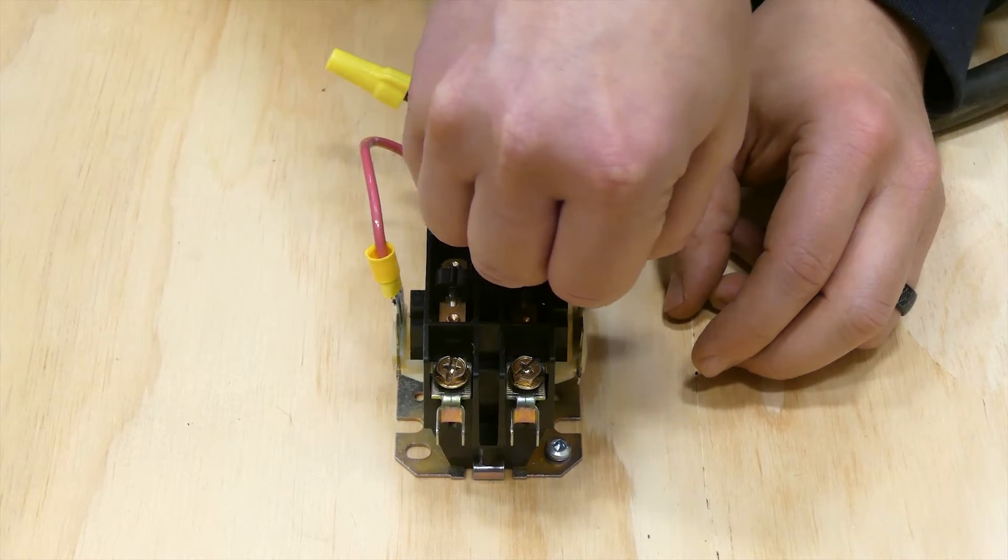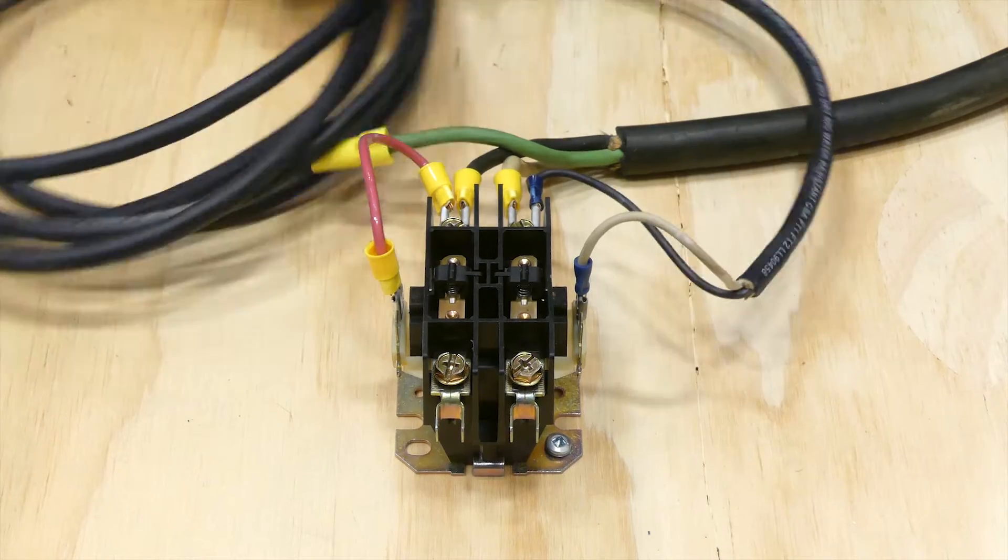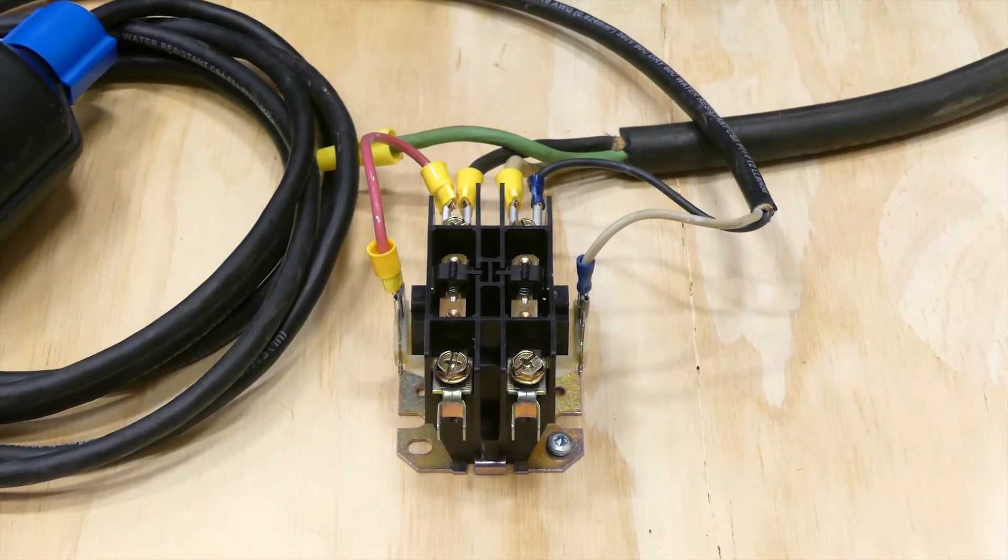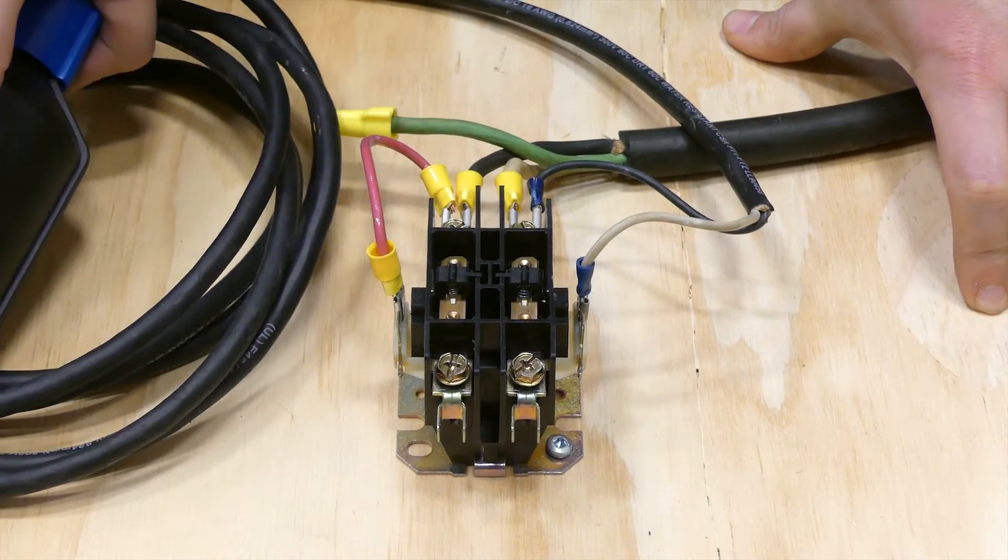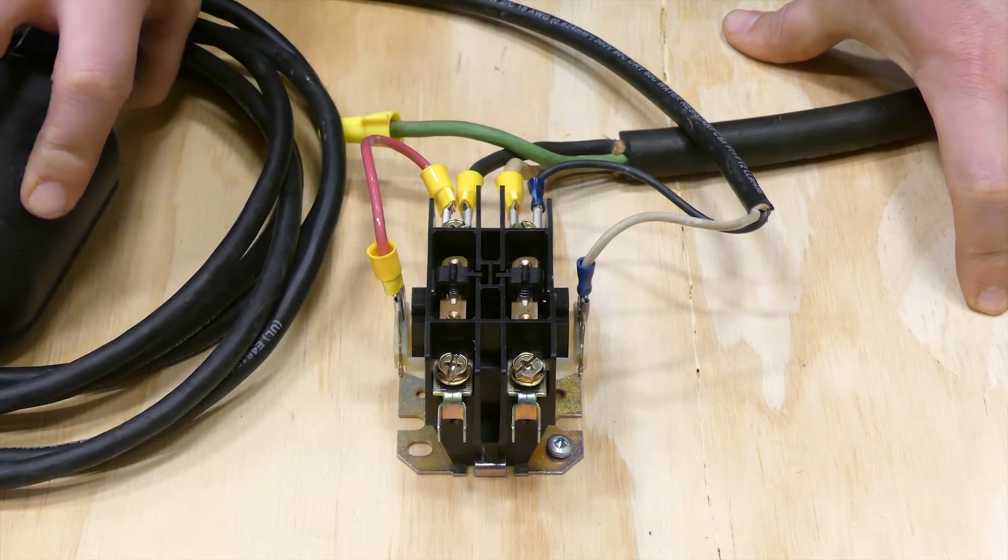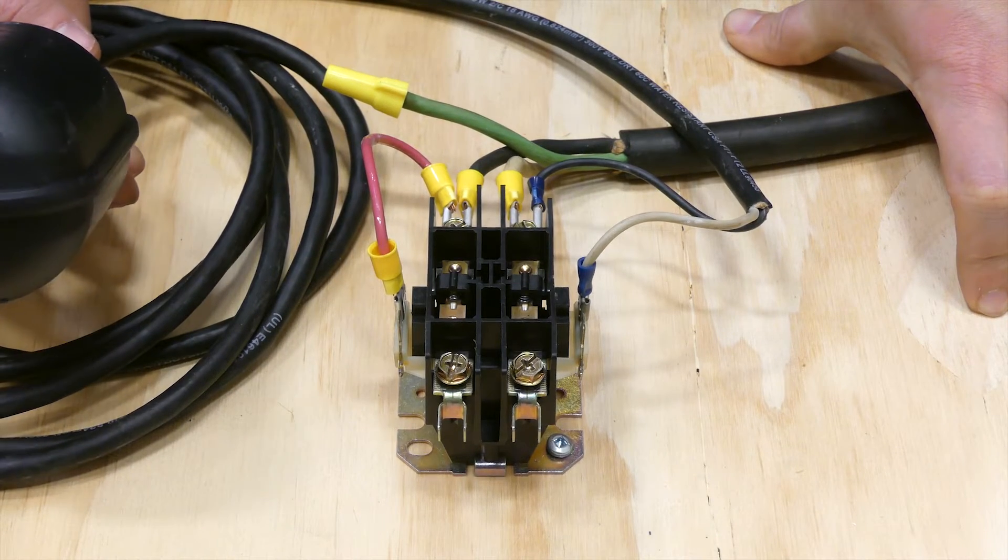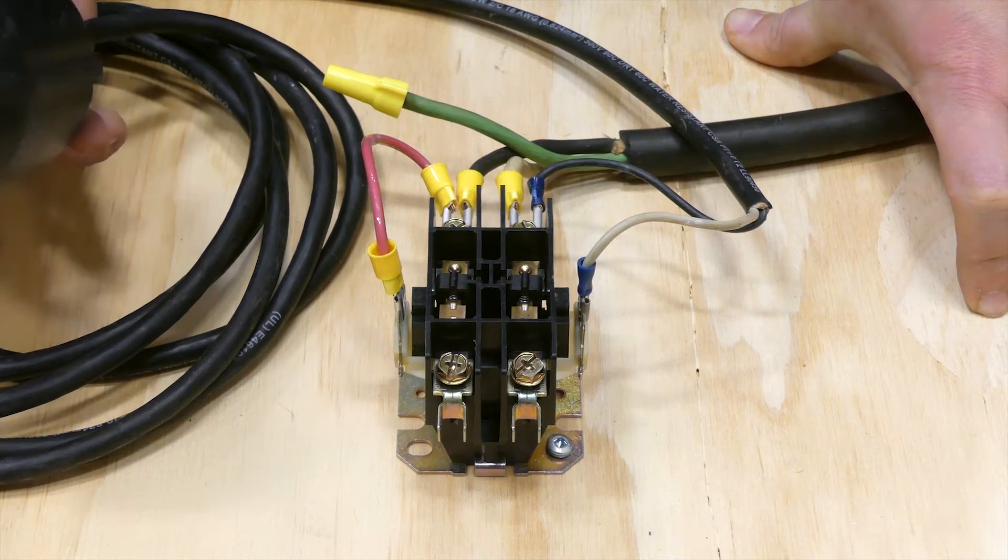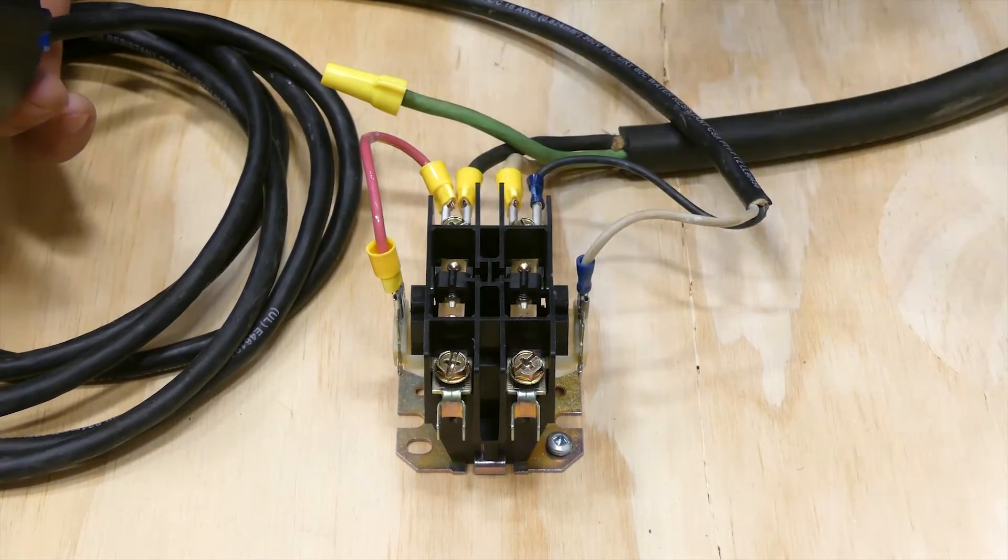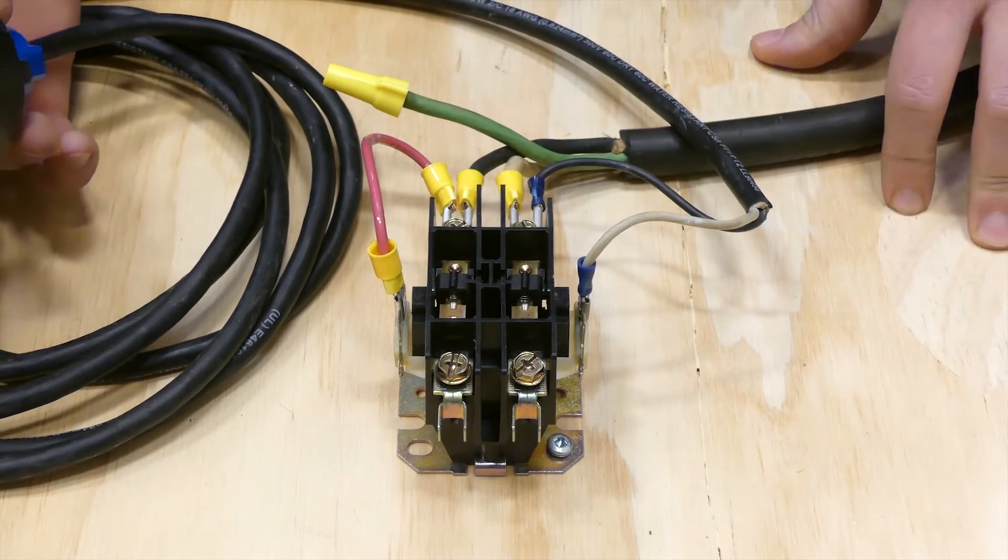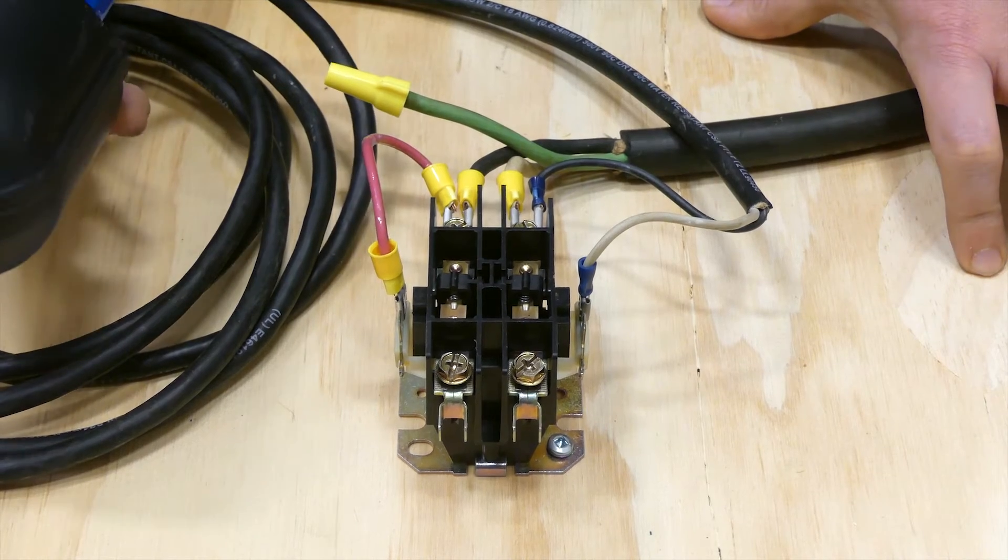So now with our float switch I will turn the power on. So now in this configuration this is a normally open or pump down float switch. And so when we raise this switch up, the water level in the tank is high and so the switch was raised up and the contactor is pulled in sending voltage through the bottom of the contactor.